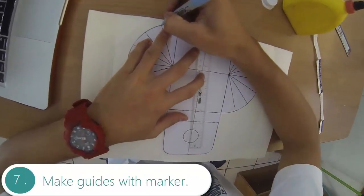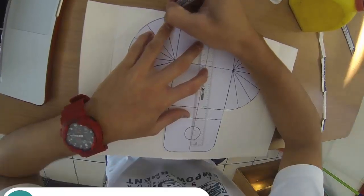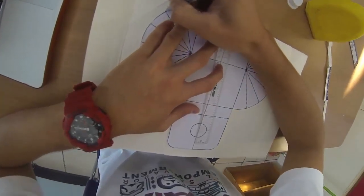Now, with your marker, make guides based on what the outline indicates. You will need this to draw it later.